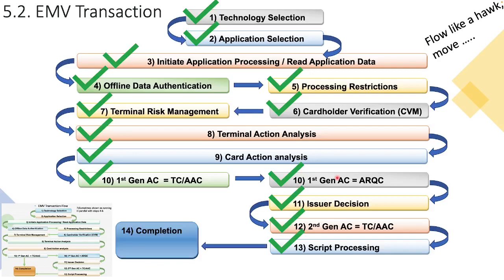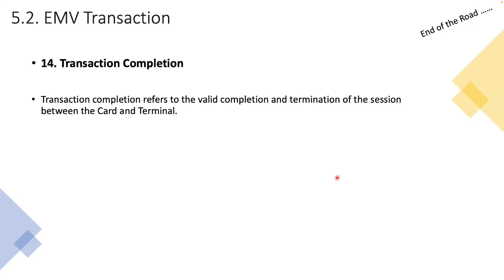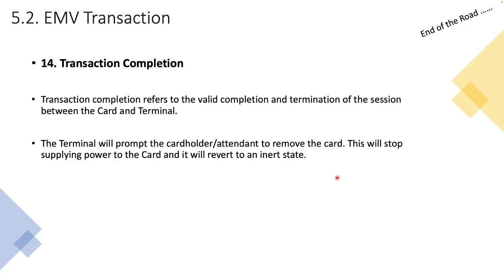Now we are at a point where we can finally complete the transaction. Transaction completion refers to the valid completion and termination of the session between the card and terminal. All necessary data exchange and processing has taken place; there's nothing more to be done. The terminal will prompt the cardholder or attendant to remove the card from the POS device. Just prior to the card being removed, the terminal actually stops supplying power to the card — the card becomes inert, going dormant.